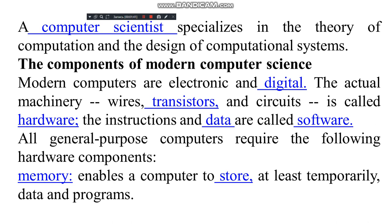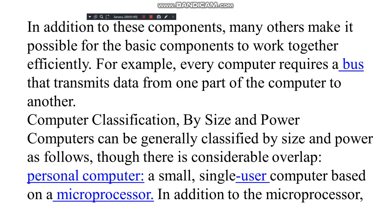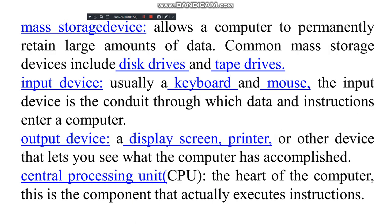All general-purpose computers require the following hardware components: memory, which enables a computer to store, at least temporarily, data and programs; mass storage devices, which allow a computer to permanently retain large amounts of data — common mass storage devices include disk drives and tape drives; and input devices, usually a keyboard and mouse, through which data and instructions enter a computer.